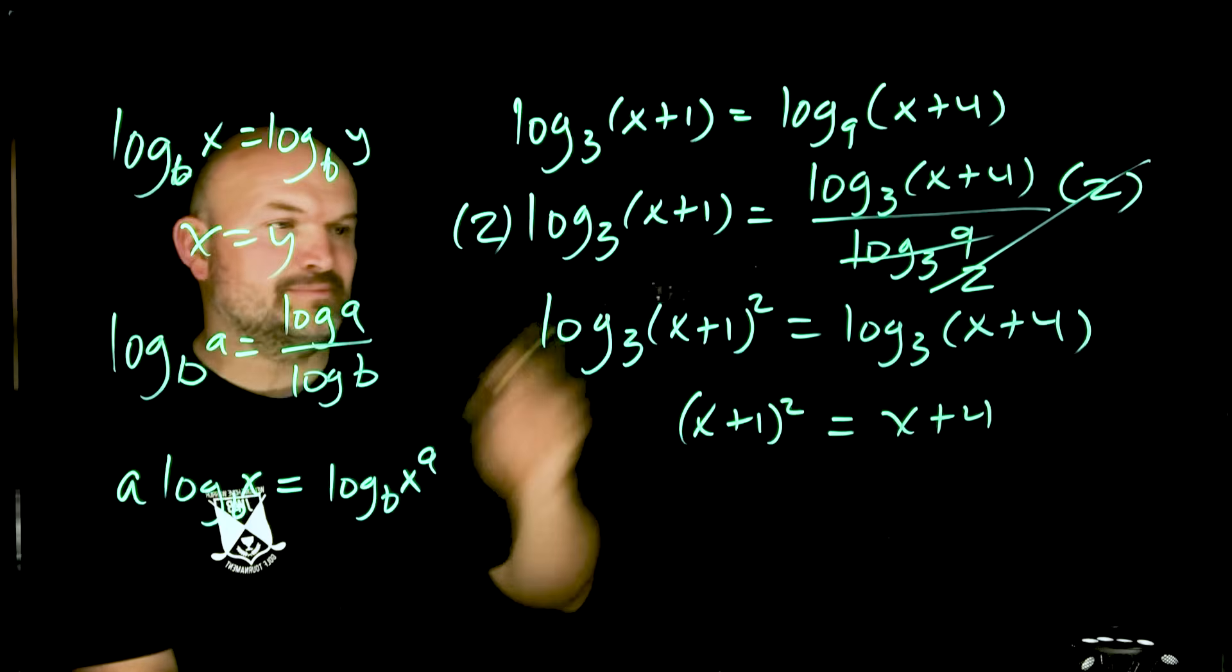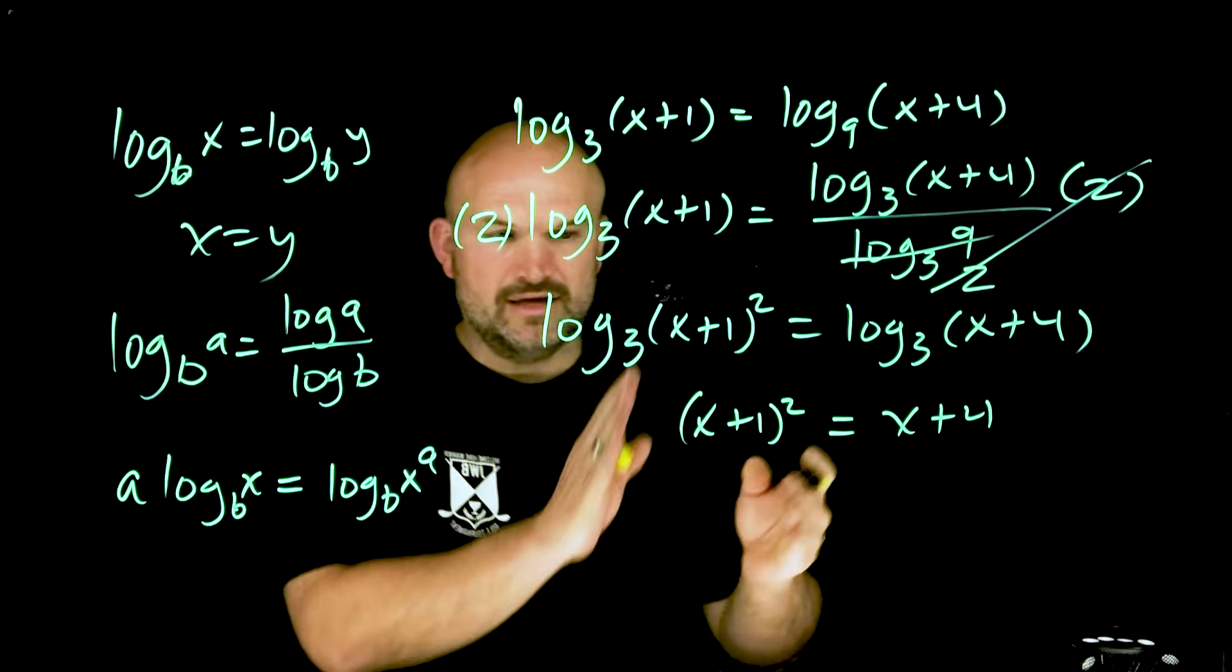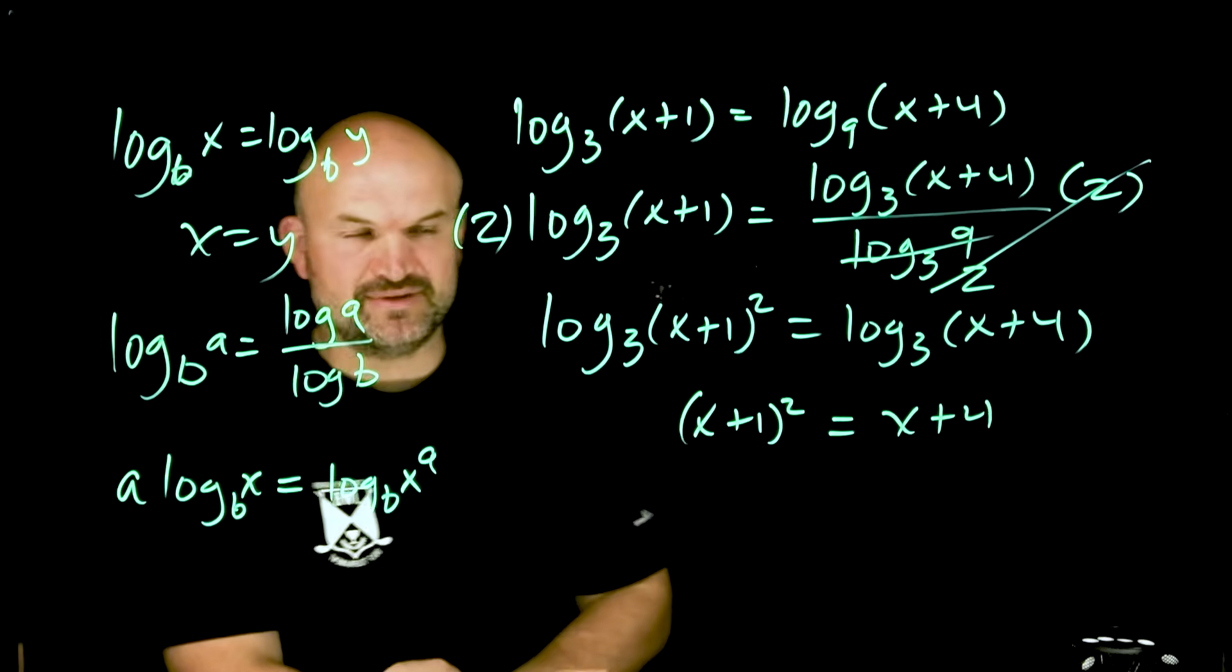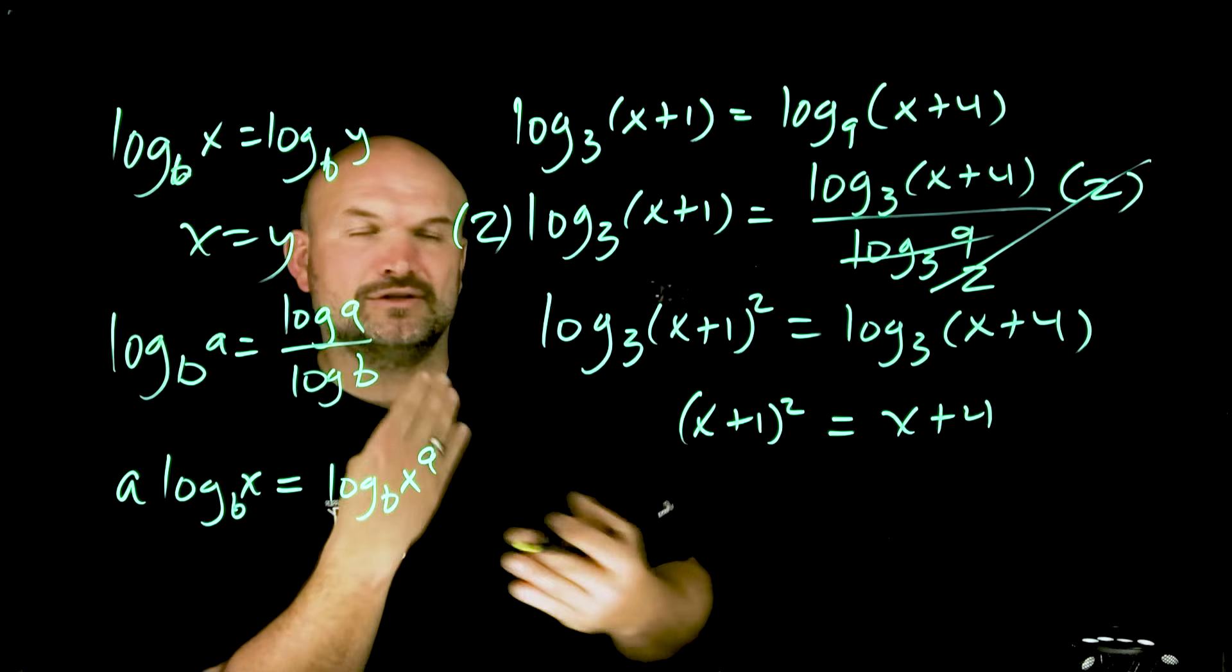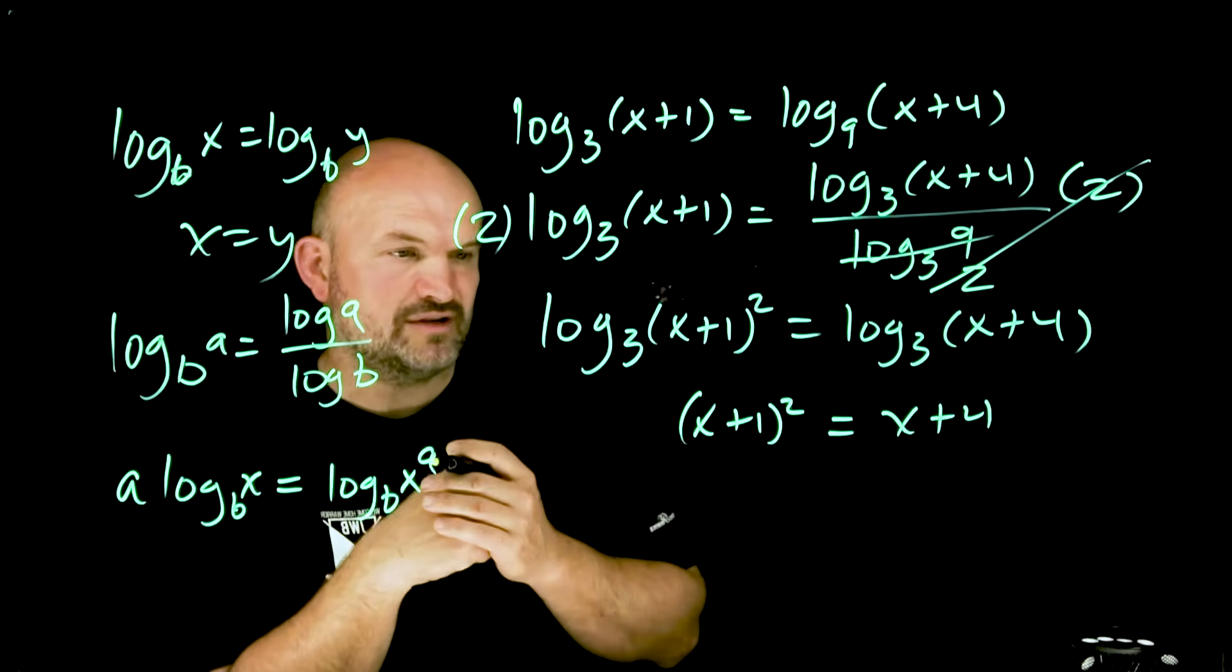Now you can see that all I simply need to do is go ahead and simplify this. That's going to give a quadratic because (x+1) squared is going to give me an x squared. So then I'm going to get everything over to the same side and either look to apply factoring or the quadratic formula.